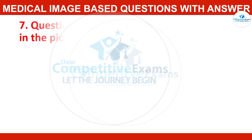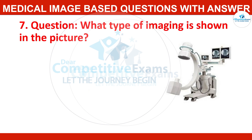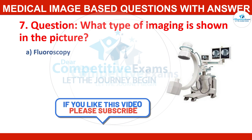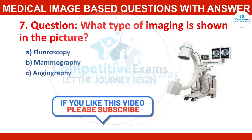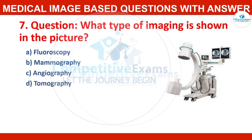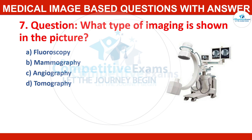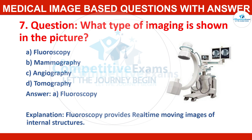Question number seven: what type of imaging is shown in the picture? Options: fluoroscopy, mammography, angiography, or tomography? Correct answer: fluoroscopy. Fluoroscopy provides real-time moving images of internal structures.